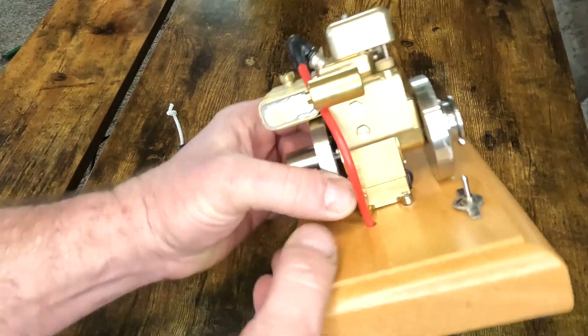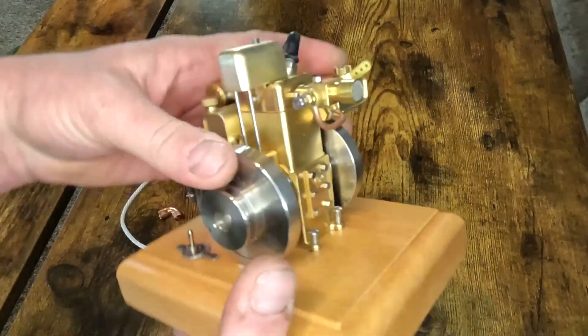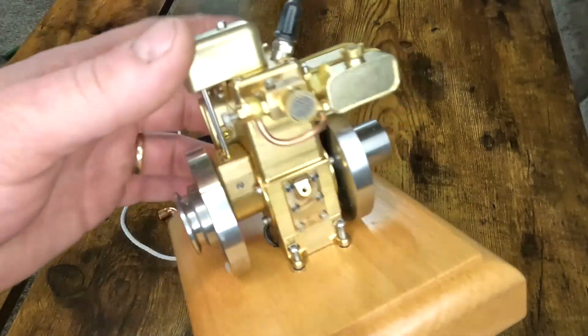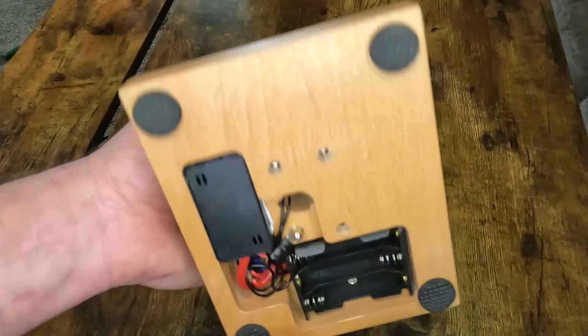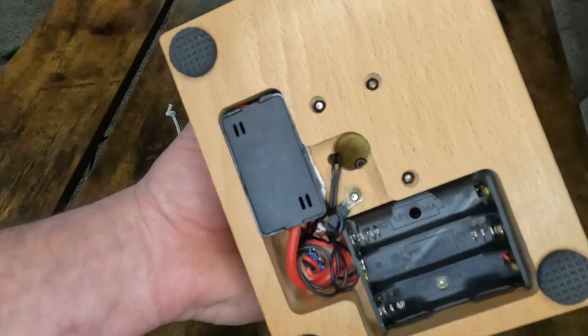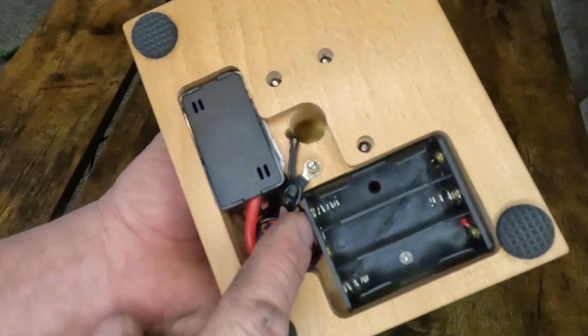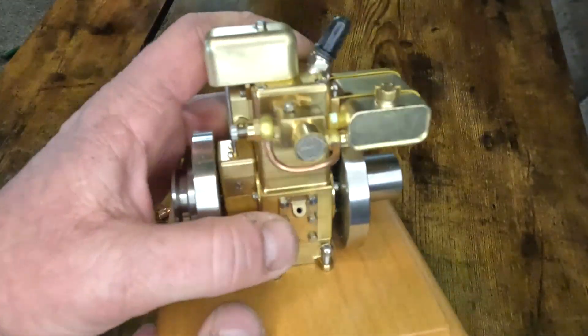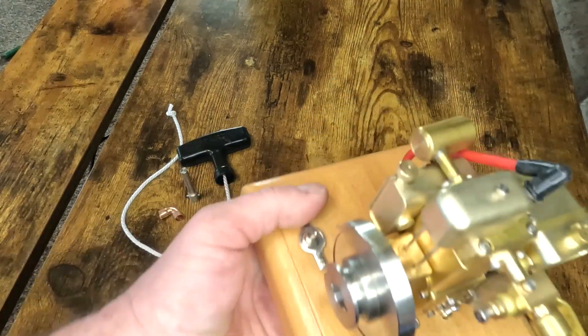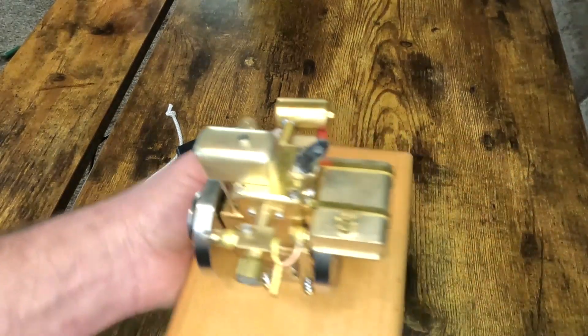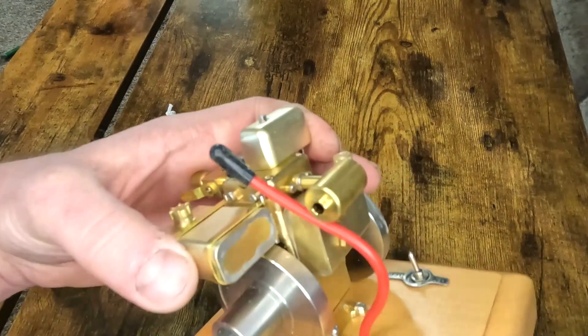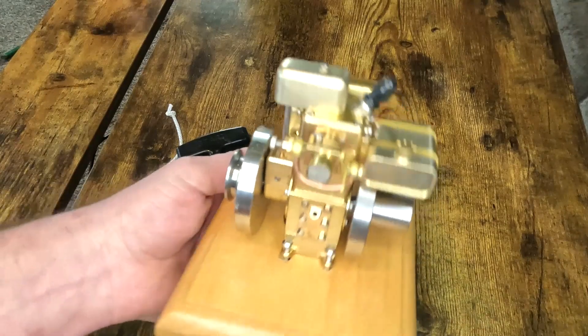First impressions: quality control must have had the day off because, as you can see, it's not bolted to the base very well. Appears that our nuts are missing. Runs on three double-A batteries for the ignition system. We have an adjustable throttle. I'll get this bolted back down and see what we've got with it.